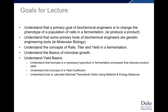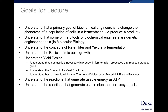We will understand the basics of microbial growth and yield basics — specifically, that biomass is a necessary byproduct in fermentation processes that reduces overall yield. We'll understand the concept of a yield coefficient and how to calculate maximum theoretical yields using material and energy balances, as well as the reactions in biology that generate usable energy as ATP and usable electrons for biosynthesis, which you'll need later to do material and energy balances for potential products.